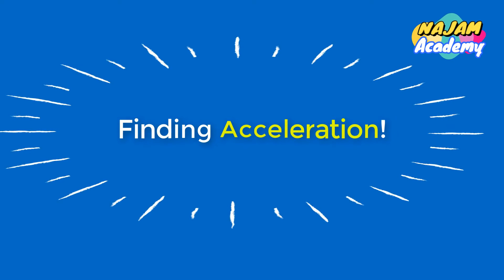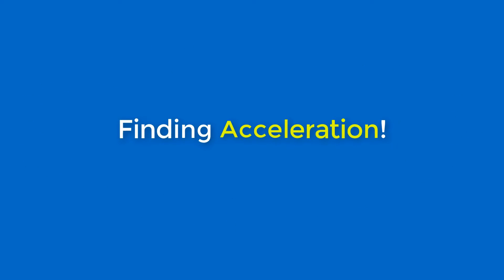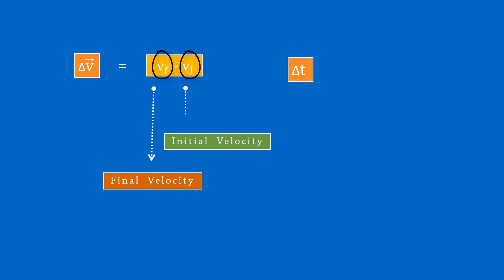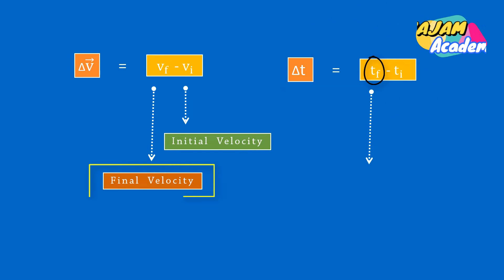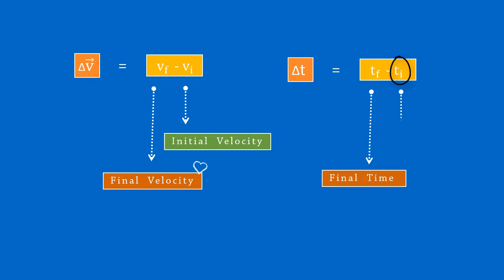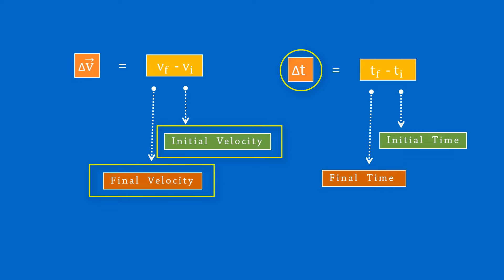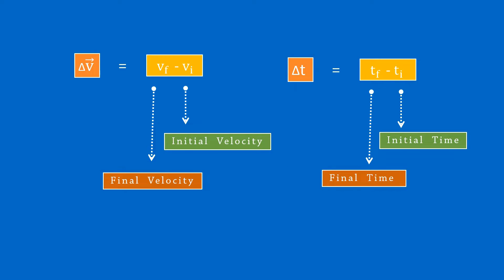In this video you will learn about finding acceleration of any body very easily. Do you know about delta v and delta t? Delta v is equal to vf minus vi, where vf is the final velocity and vi is the initial velocity of a body. Delta t is equal to tf minus ti, where tf is the time of final velocity and ti is the time of initial velocity — that is, delta t is the time interval between the initial and final velocity of a body. Remember the values of delta v and delta t.